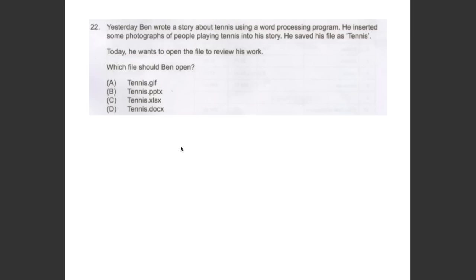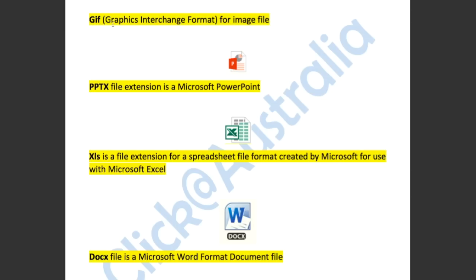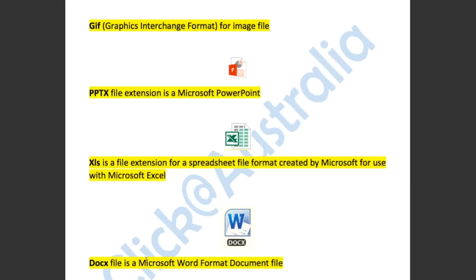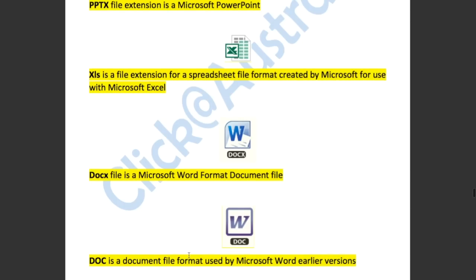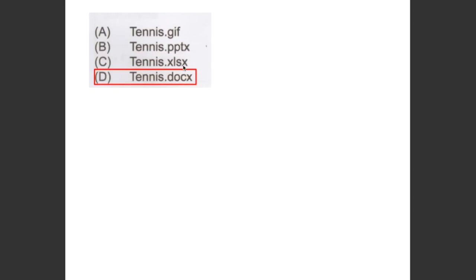This question asked us which file should Ben open if he saved photographs of people playing tennis. GIF is an image file format. PPTX is a Microsoft PowerPoint file extension. XLS is a spreadsheet file format for Microsoft Excel. DOCX is a Microsoft Word format document file. DOC is an earlier Microsoft Word format. So the answer has to be D, Tennis.DOCX.